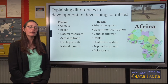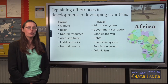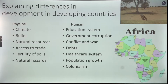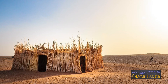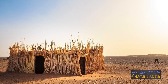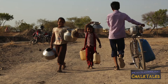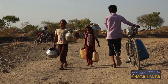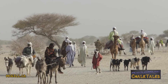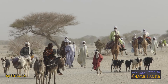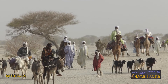Individual developing countries can be at very different levels of development and you need to be able to explain why, naming countries where this applies. One physical factor that makes it difficult for some countries to develop is climate. Countries with an extreme climate can struggle to grow enough food for their population. For instance, in the Sahel region of Africa, very variable and low rainfall patterns lead to frequent droughts, meaning famine is common, leading to malnutrition and loss of income.